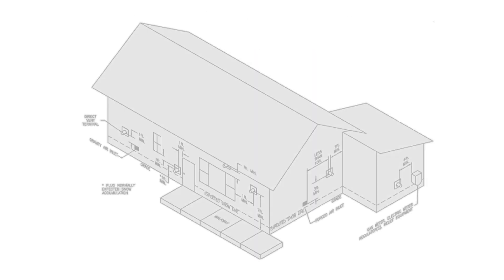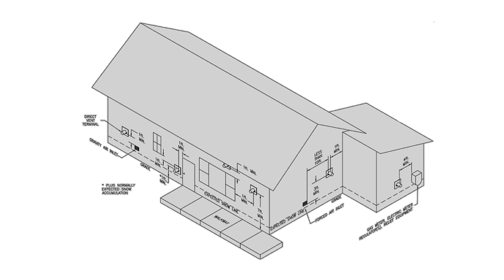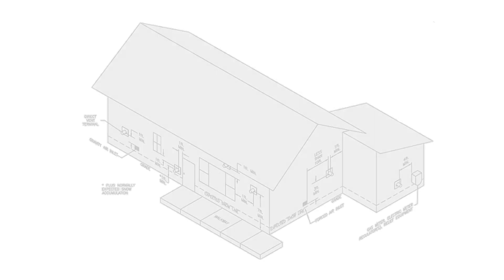If you are already installing power or direct vented U.S. Boiler products, you are familiar with our house drawing that advises you of all the clearances to doors, windows, gravity air inlets, utility meters, and inside corners — all the information in a picture instead of having to search through the venting chapter of the I&O manual to find the information you are looking for.